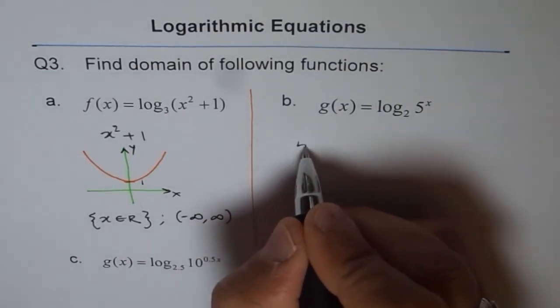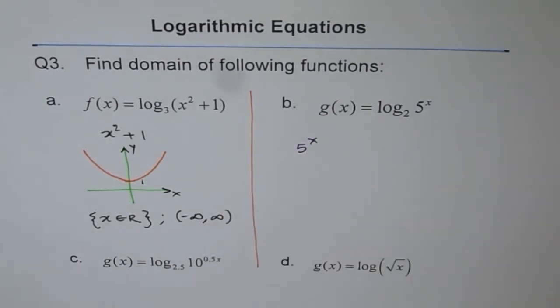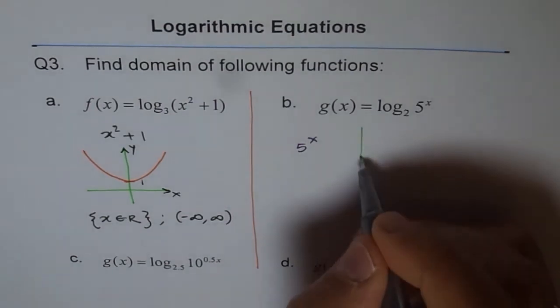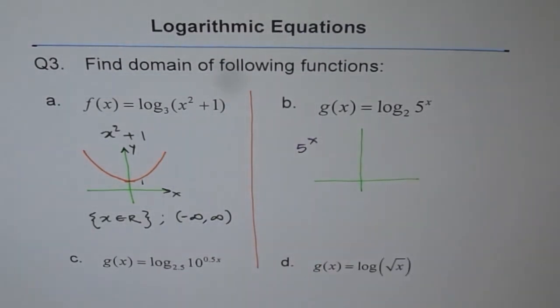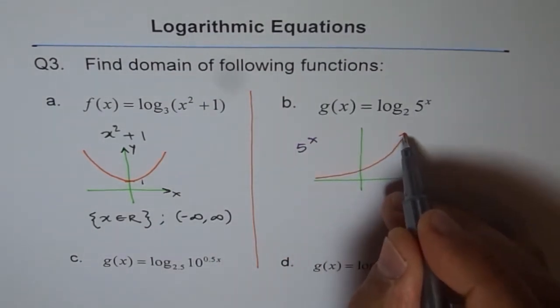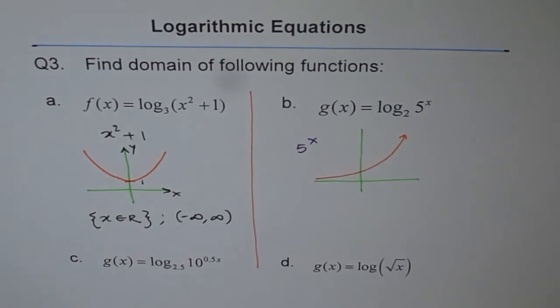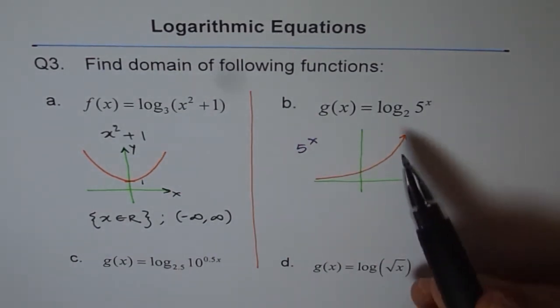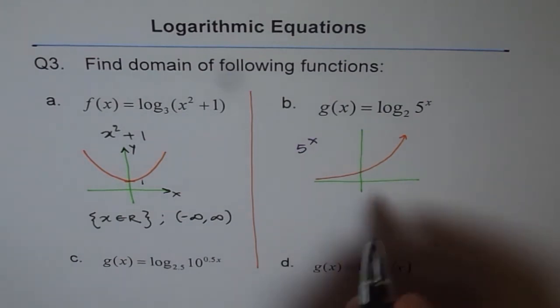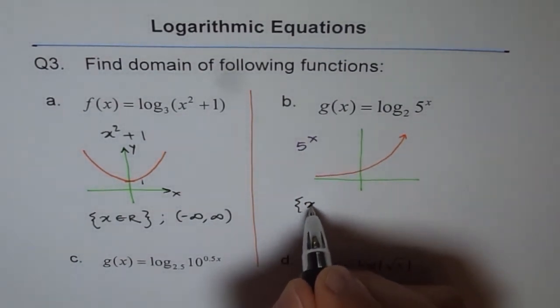Now we say 5ˣ, let's visualize this. 5ˣ, can it ever be negative? I don't think so. Let me make a rough sketch of this. So if I take some exponential function and its power, 5ˣ, however the value be, it will look kind of like this. It is always positive.